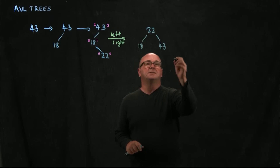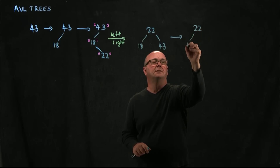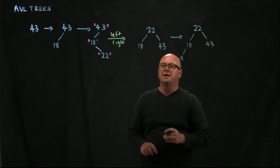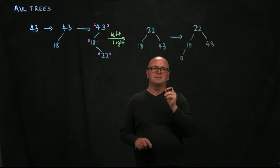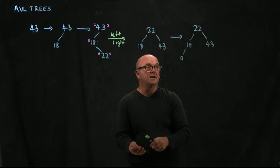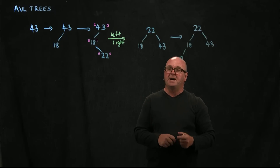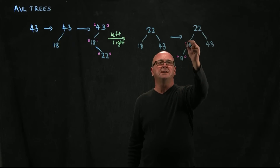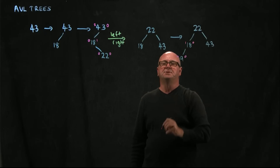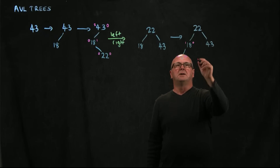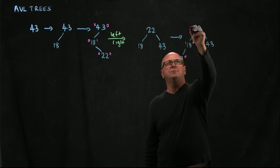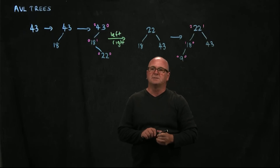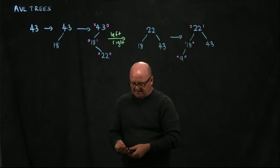Next we add a 9. 9 is less than 22 and less than 18, so it goes to be the left child of 18. Is this tree balanced? Our 9 has 0 and 0. Our 18 has 1 child on the left and 0 on the right. Our 22 has height 2 on the left and 1 on the right — that's okay. So this tree is still balanced.